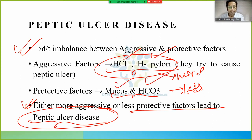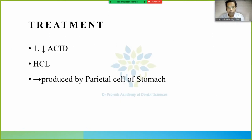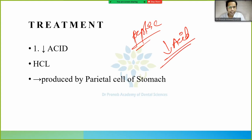When aggressive factors increase or protective factors decrease, peptic ulcer disease results. Either too much aggressive factor or too less protective factor leads to peptic ulcer. The treatment involves decreasing acidity. To understand acidity, we need to know about hydrochloric acid — where is it secreted?